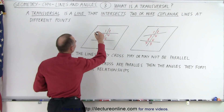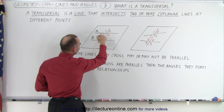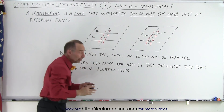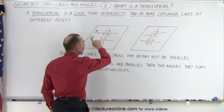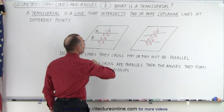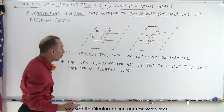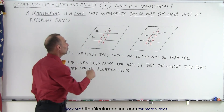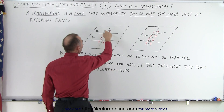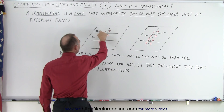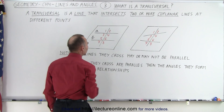So here we have two coplanar lines — let's call them line A and B. Notice they happen to be parallel, but they don't have to be parallel. As long as they're on the same plane, that means they're coplanar. And notice this here is what we call the transversal, because it crosses or intersects both of the lines that are on the same plane, therefore they're coplanar.